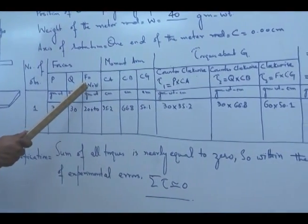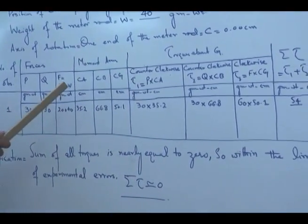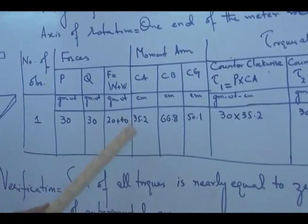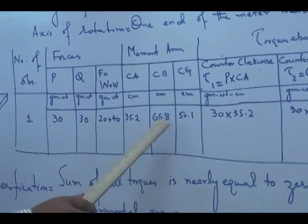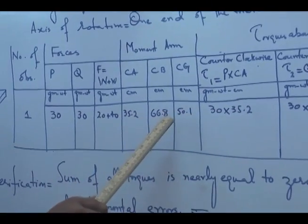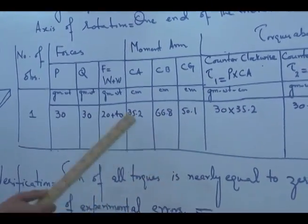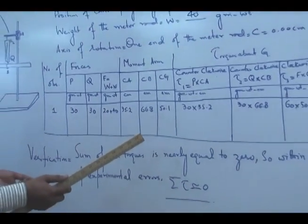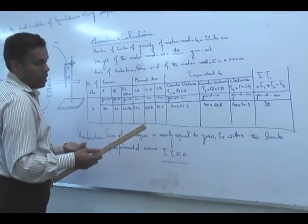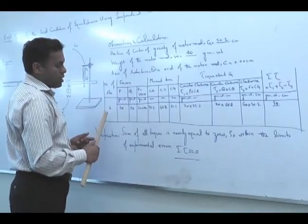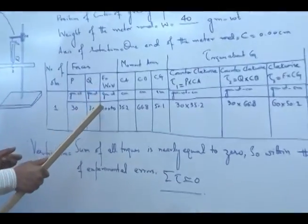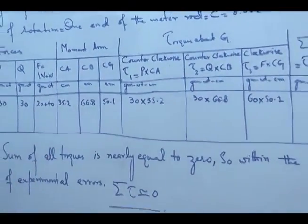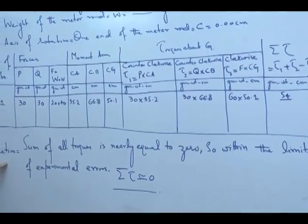In our second and third observations we will just increase capital W. We can keep C-A, C-B, and C-G as constant. We can also change the positions of the pointers — that is, the positions of these loops — because mathematically torque is the product of force times moment arm, so any one parameter change will produce a change in results. In our second and third observations we will increase W at the center of gravity and check the answer. At the end it is verification — we are verifying that the sum of all torques equals zero.